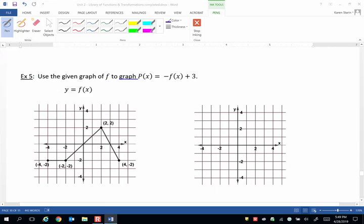Example 5, use the given graph of f to graph p(x) which would be -f(x) + 3. So the graph on the left is just a piecewise function. We haven't written a formal equation for it, but we have given you points that show how the graph changes on different pieces.